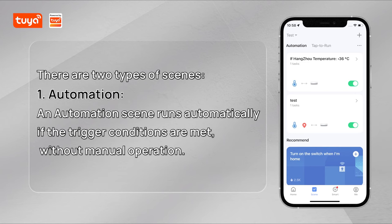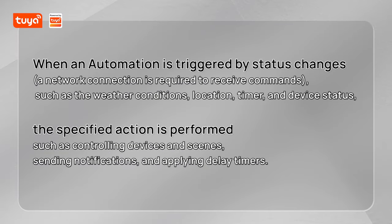There are two types of scenes. Automation: an automation scene runs automatically if the trigger conditions are met, without manual operation. When an automation is triggered by status changes, a network connection is required to receive commands, such as the weather conditions, location, timer, and device status. The specified action is performed, such as controlling devices and scenes, sending notifications, and applying delay timers.